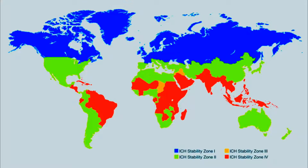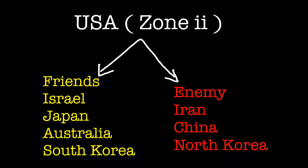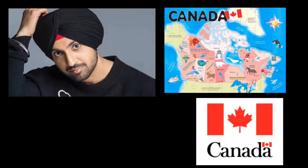Here is a trick to remember countries and their climatic zones. For Zone 2, remember that USA's best friend countries — Japan, Australia, Israel, and South Korea — share the same zone. USA's enemy countries — China, North Korea, and Iran — are also in Zone 2. Friends and enemies of the USA all share the same climatic zone.